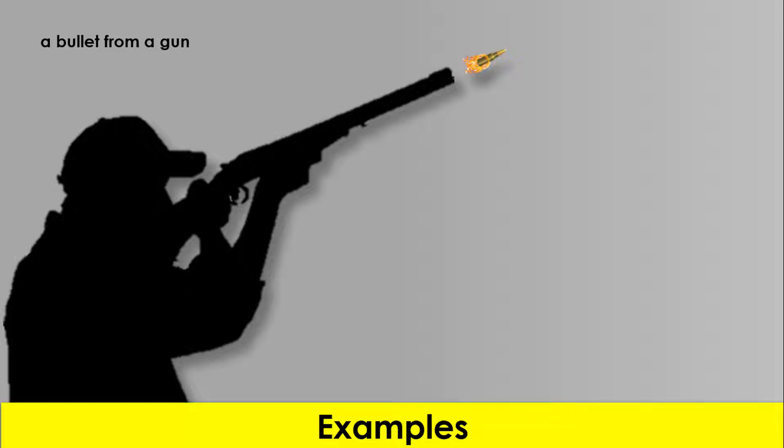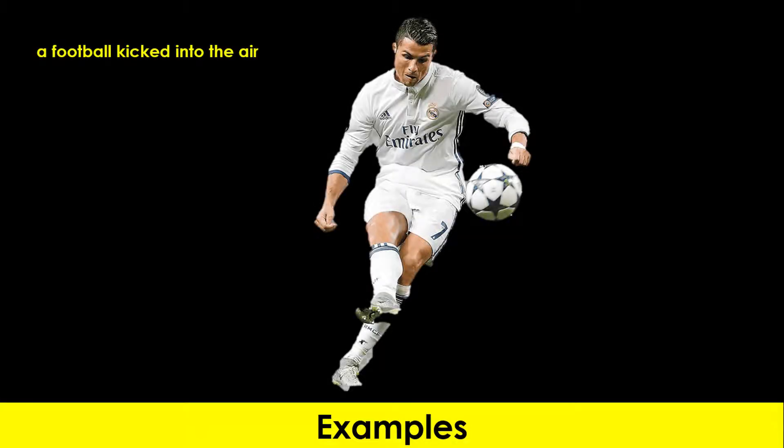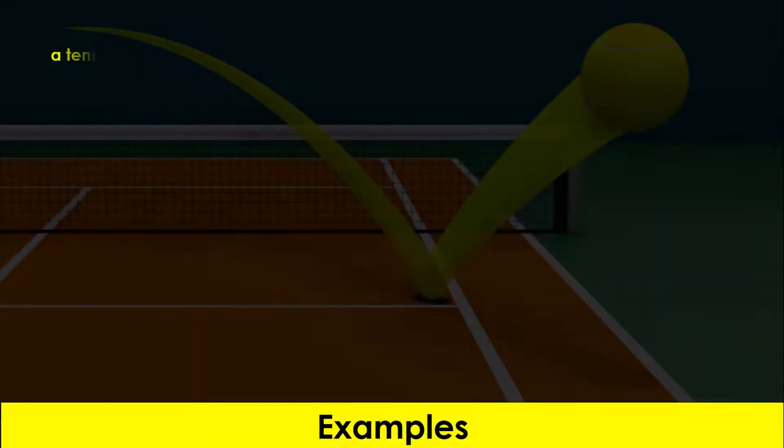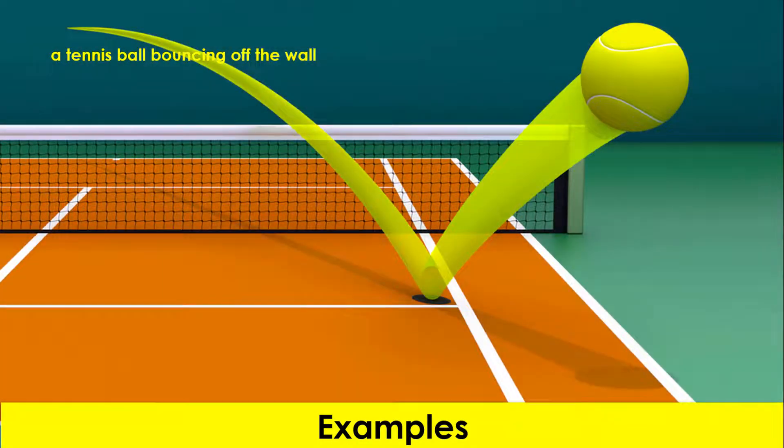Examples of projectiles or objects that undergo projectile motion are a thrown javelin, a bullet released from a gun, a football kicked into the air, a tennis ball bouncing off the wall, etc.